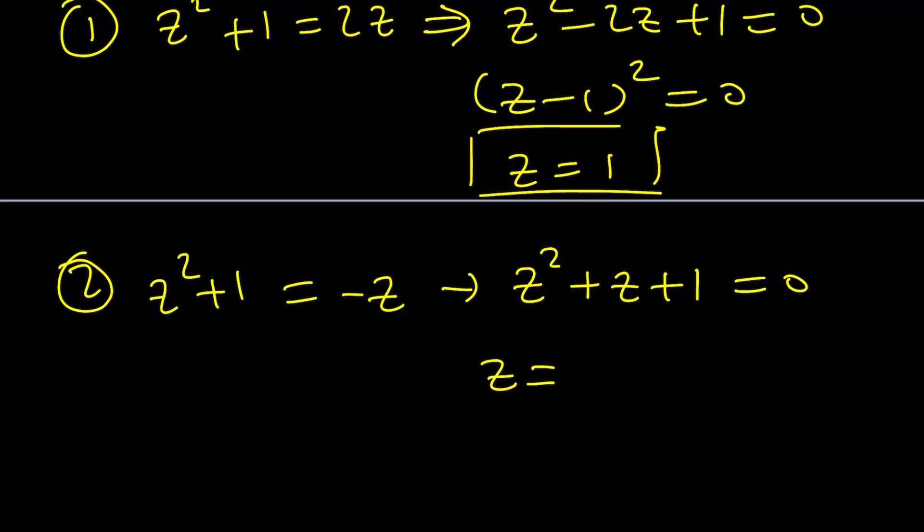From here, z becomes negative 1 plus minus the square root of 3i over 2. In other words, the cube roots of unity, of course, except for 1. But 1 comes from equation number 1. So, 1 is from 1. Make sense? Great.